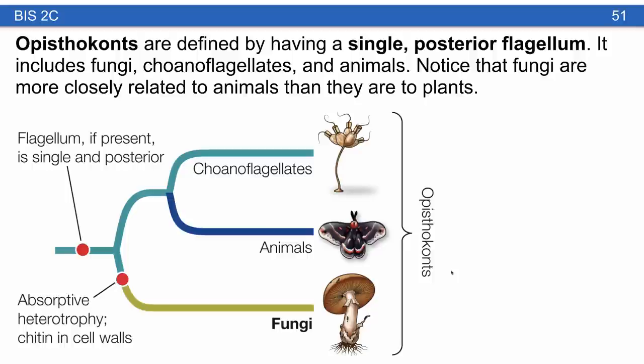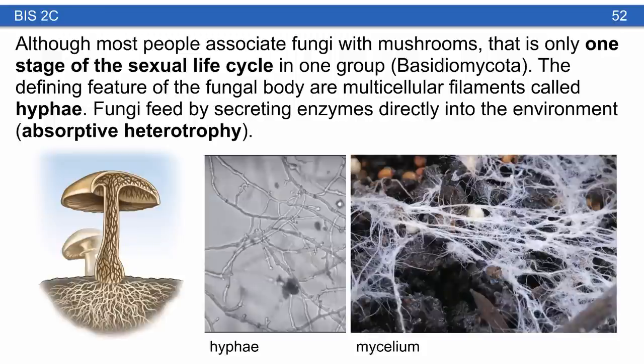Let's define a bigger picture and put fungi into the context of the tree of life. Opisthokonts are defined by having a single posterior flagellum, and they include fungi, choanoflagellates, and animals. Think of a sperm cell with one flagellum extending out the back. Notice that plants are not part of this — fungi are in fact much more closely related to animals than they are to plants.